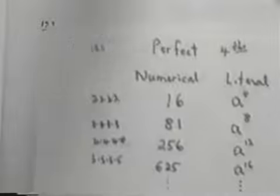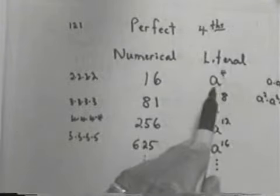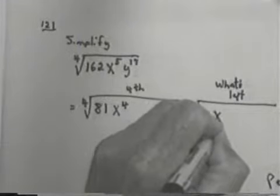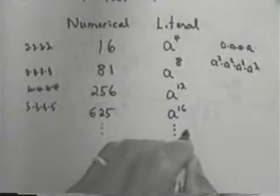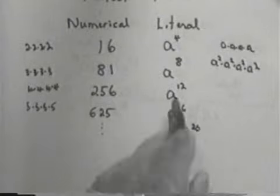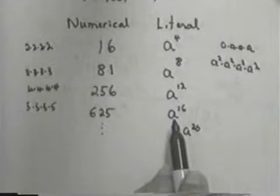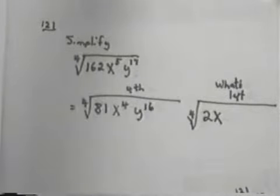Now, what about x to the 5th? x to the 5th is not a perfect 4th, but x to the 4th will be. And I can write x to the 5th as x to the 4th times x. Y to the 17th is not in this list because it's going to be 4, 8, 12, 16. The next would be 20. So, I do not have 17 in the list, y to the 17th, but I would have y to the 16th. So, that means that y to the 16th is a perfect power. What would I have over here? What's left would be y. Because y to the 16th times y is y to the 17th.